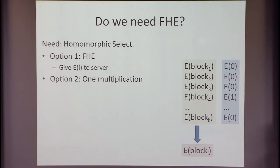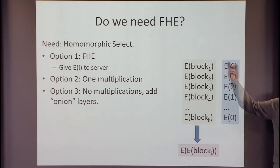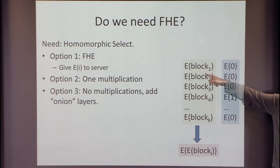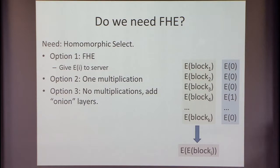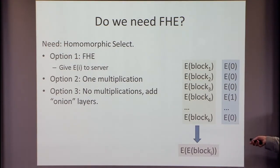One multiplication and many additions — multiplications are hard. Let's get rid of multiplications altogether. We can do the same thing with no multiplications. The only difference is that now I want to think of this value not as an actual encryption but as a plaintext value I'm multiplying into the ciphertext — a scalar multiplication rather than a ciphertext multiplication. At the end I get an encryption of an encryption of block i, because I'm treating this internal encryption as just data, as a plaintext value.